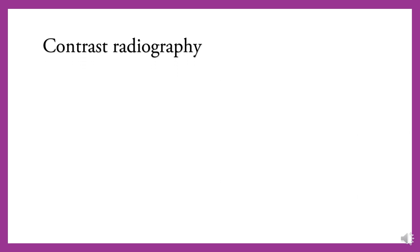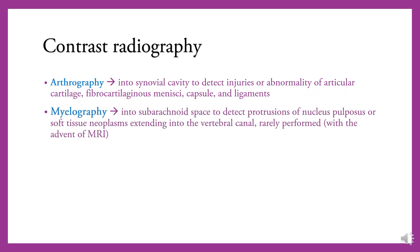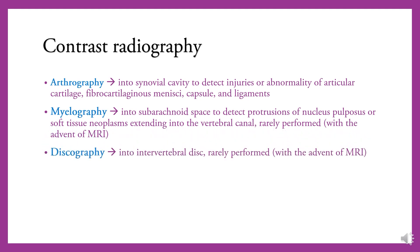Contrast radiography includes arthrography — injecting contrast into a synovial cavity to detect injuries or abnormalities of articular cartilage, fibrocartilaginous menisci, capsule, and ligaments. Myelography injects contrast into the subarachnoid space to detect protrusions of nucleus pulposus or soft tissue neoplasm extending into the vertebral canal, though it is rarely performed with the advent of MRI. Discography can image the intervertebral disc but is also rarely performed now. Sinography injects contrast into an external sinus to detect its source.